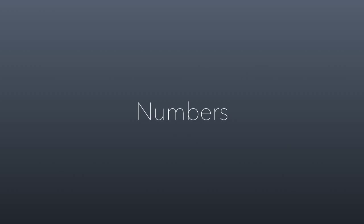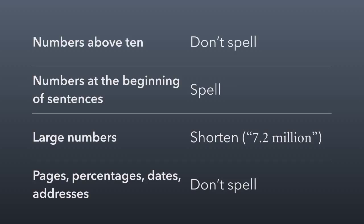Finally, let's talk about numbers. Numbers above 10: don't spell them out. Numbers 10 or below: spell out the number. Numbers at the beginning of a sentence: always spell them out. Large numbers: shorten them, so say '7.2 million' instead of adding trailing zeros. When talking about pages, percentages, dates, or addresses, always use the numeric version — never spell those out. Those are easy guidelines to memorize, and they'll help you get numbers right in your writing. I look forward to seeing you all in class, where we'll do the quizzes together and illuminate these subjects even further.